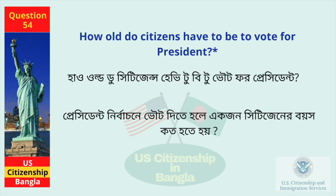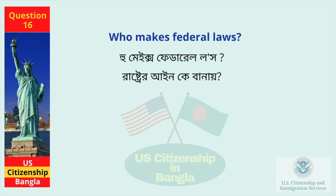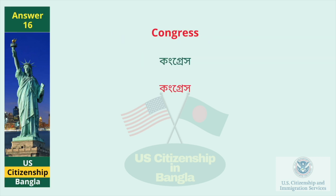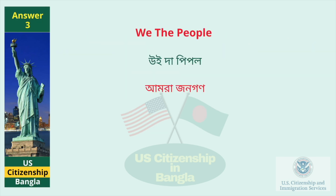How old do citizens have to be to vote for president? 18 and older. The idea of self-government is in the first three words of the Constitution. What are these words? We the people.